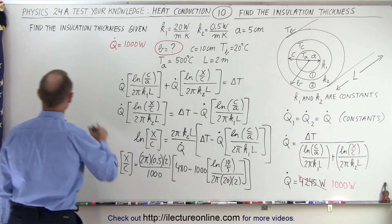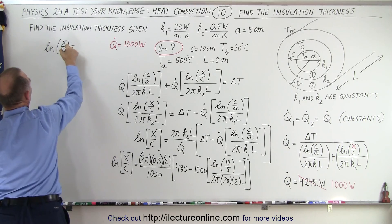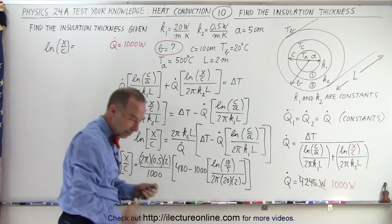Okay, so over here, we end up with the natural log of x over c is equal to, and let's see what that number is equal to.